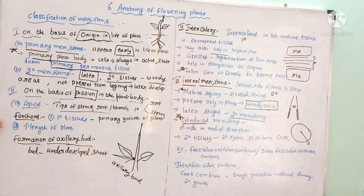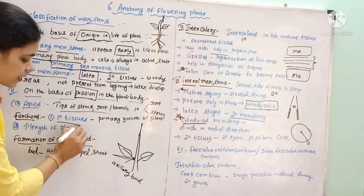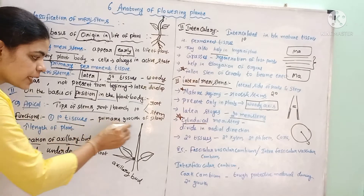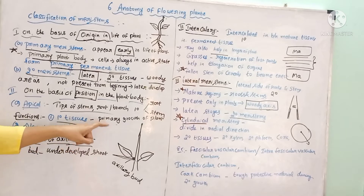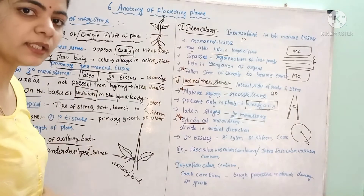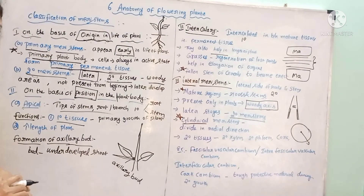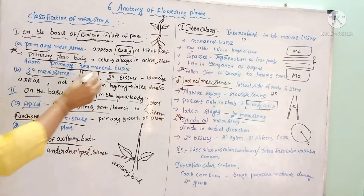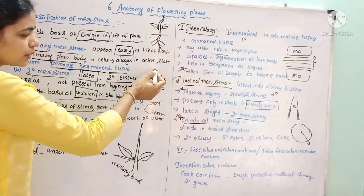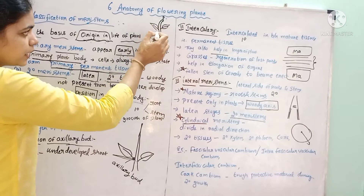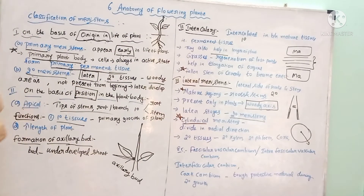The apical meristem is responsible for the formation of primary tissues, which leads to the development of the primary plant body. The increase in the length of the plant is also because of the apical meristem. When the apical meristem divides at the root tip, the length of the root increases; when dividing at the stem tip, the length — that is, the height — of the plant increases.